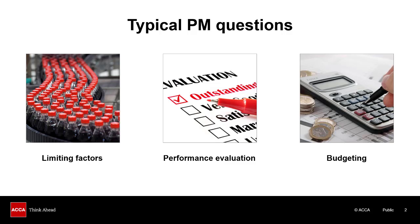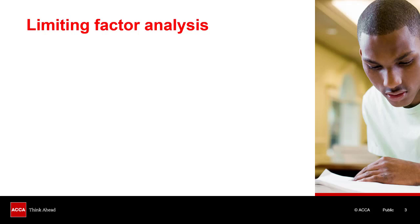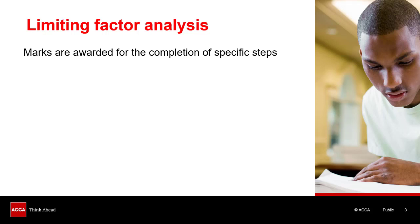Let's start with limiting factors. If we're marking a limiting factor type of question — or any numerical spreadsheet type of question for that matter — we need to find the marking guide. The marks are awarded by completing the individual steps that are built up to get to that final answer. A simple calculation is usually worth one half of a mark. For example, calculating a contribution per unit by subtracting a variable cost from a selling price — that would be worth half a mark.